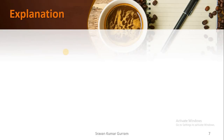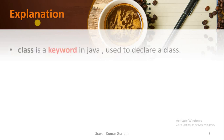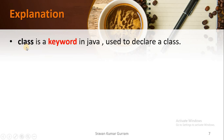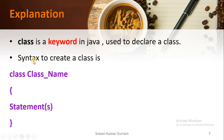Now let us analyze the words used in our code. First, we use the word class. Class is a keyword in Java used to declare a class. The syntax is: class keyword, space, class name, then open braces, write your statements inside, then close the braces.